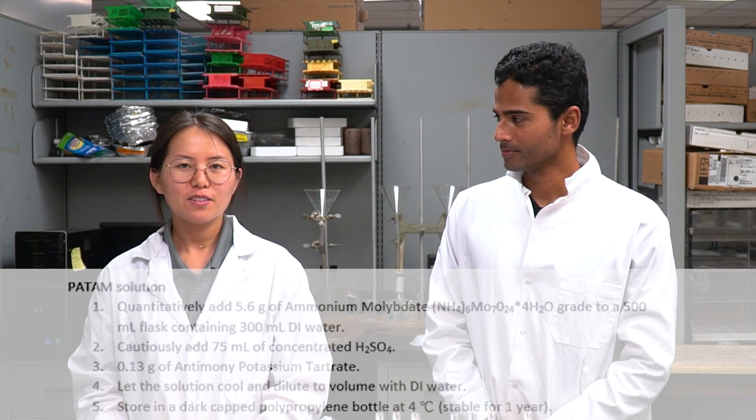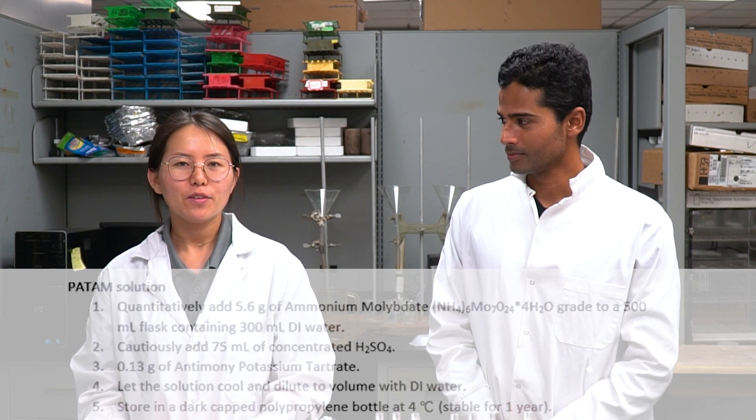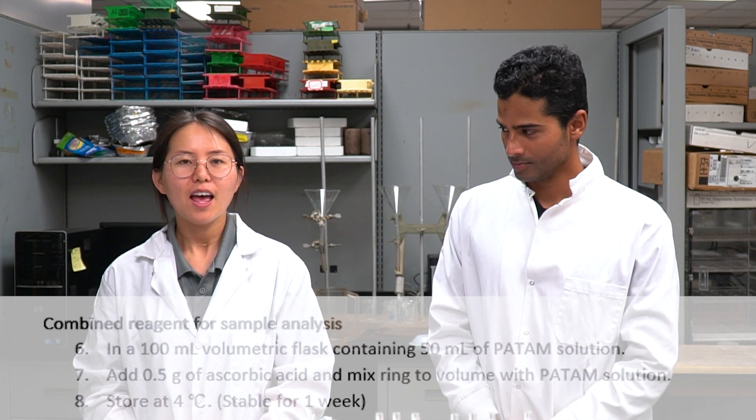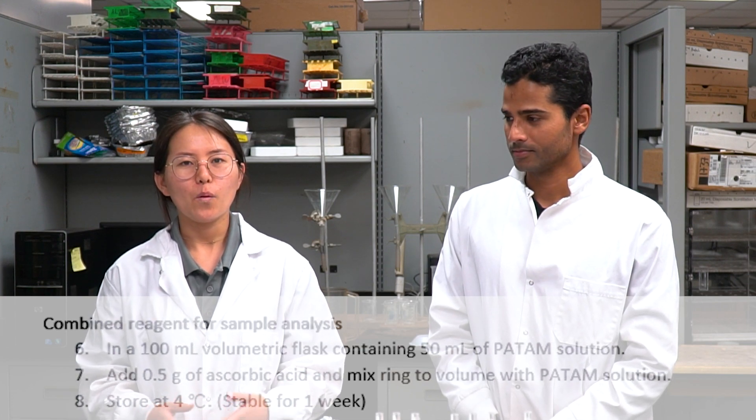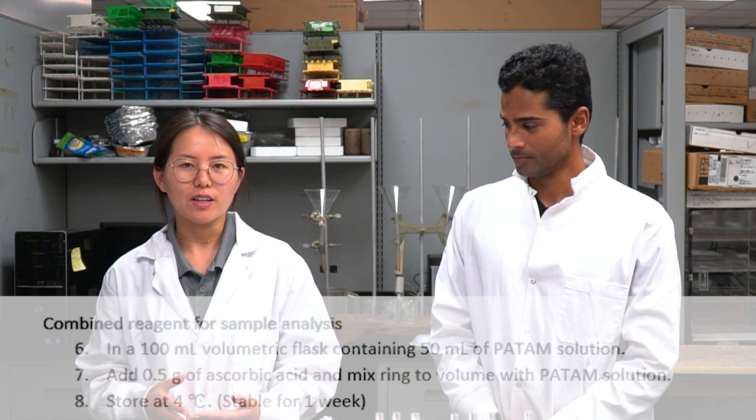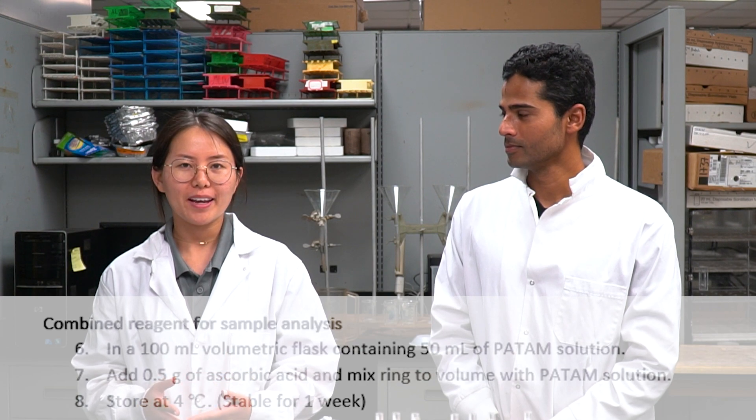After the first extraction, now we can extract aluminum and iron phosphate using 0.1 molar sodium hydroxide. Apart from the sodium hydroxide, we need to prepare the PATOM solution. From the PATOM solution, we can get the combined reagent by adding the ascorbic acid.